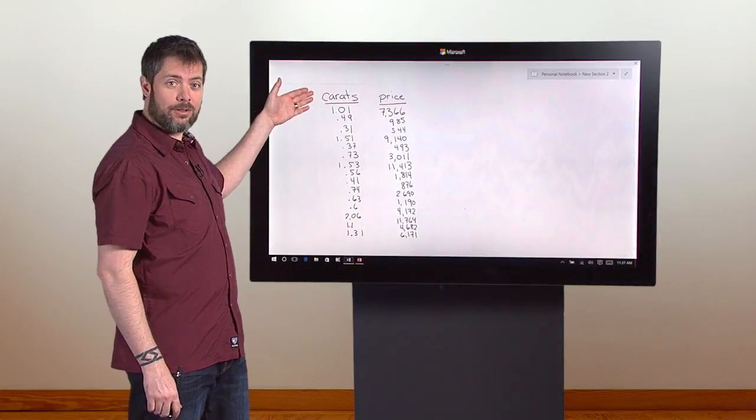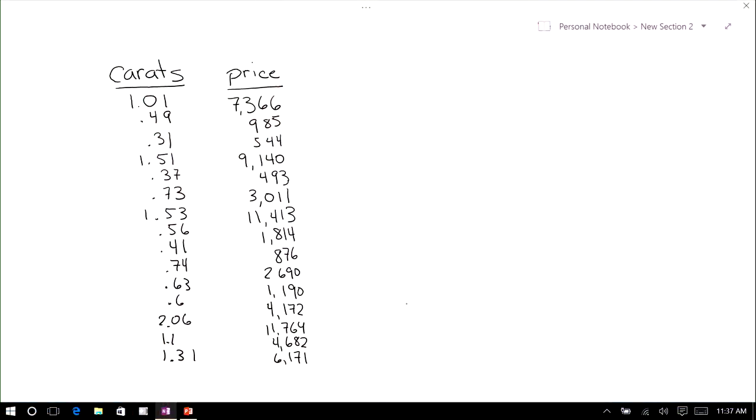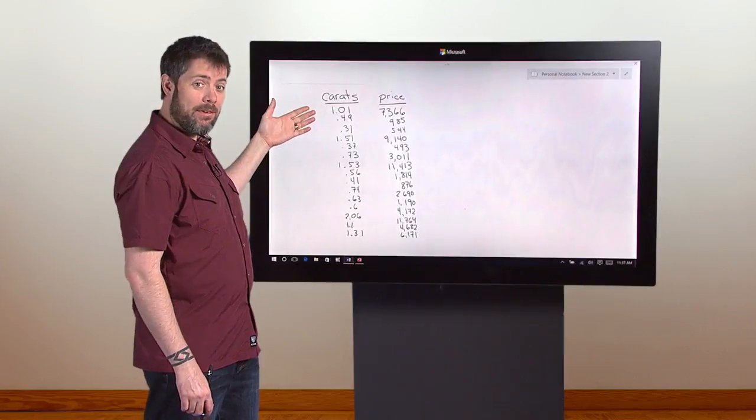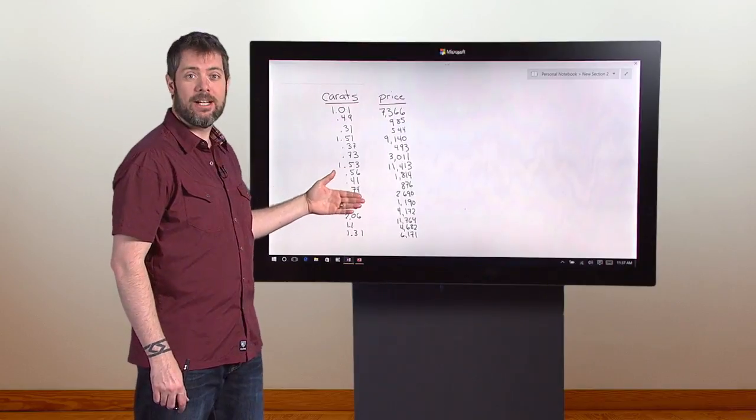So notice that our list has two columns. Each column has a different attribute, weight in carats and price, and each row is a single data point, represents a single diamond. We've actually created a small data set here, a table.